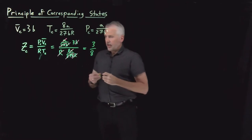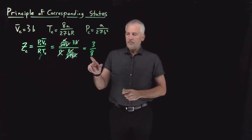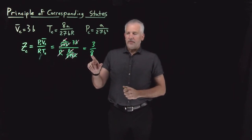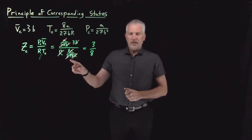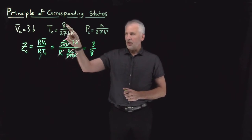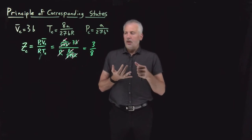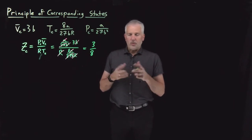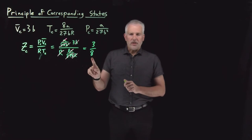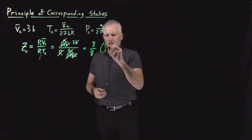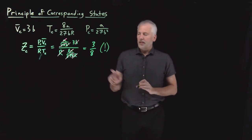What we've found is that the critical compressibility — the compressibility at the critical point for a Van der Waals gas — is 3/8, about 0.375. That's fairly remarkable, not for the numerical value, but because all of the A's and B's have canceled. What that means is regardless of the values of A and B — whether we're talking about Van der Waals coefficients for water vapor, CO₂, oxygen, or nitrogen — the critical compressibility always works out to be 3/8.